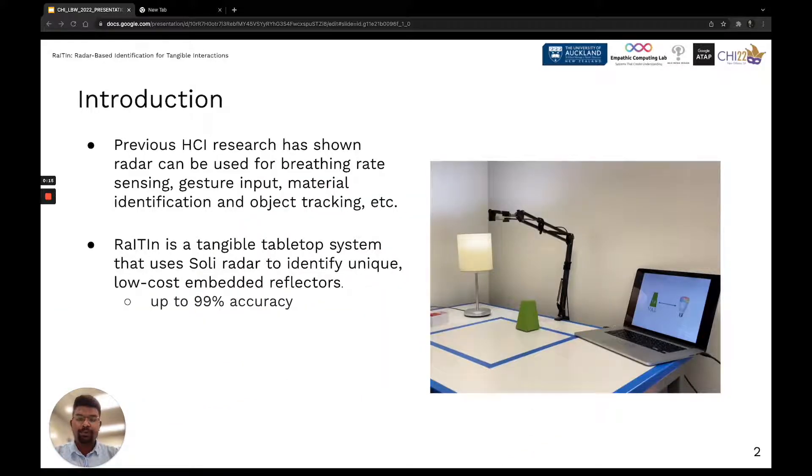Previous research has explored how radar can be used for ubiquitous human-computer interaction applications such as breathing rate sensing, gesture input, material identification and object tracking. However, to the best of our knowledge, there has been little research that explores radar-based object identification and tracking using custom radar reflectors.